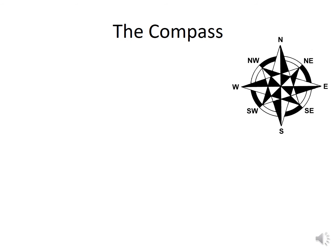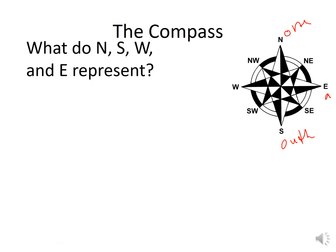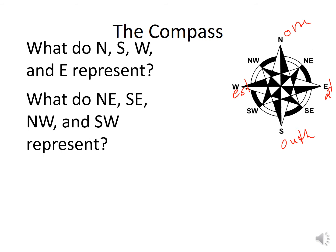Do you know what a compass is? What do N, S, W, and E represent? North, South, East, and West. And what are NE, SE, NW, and SW? Northeast, Southeast, Northwest, and Southwest.